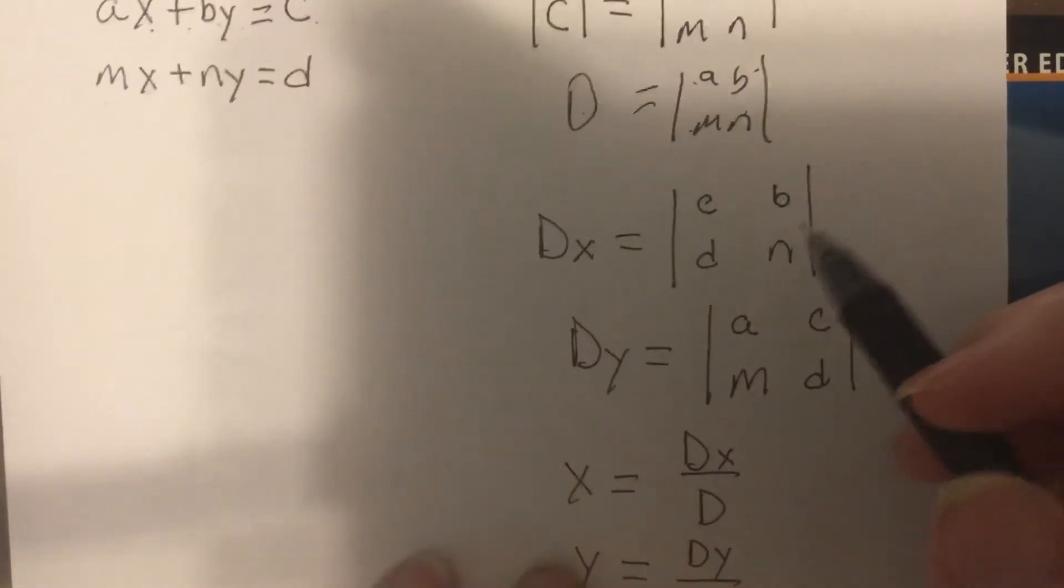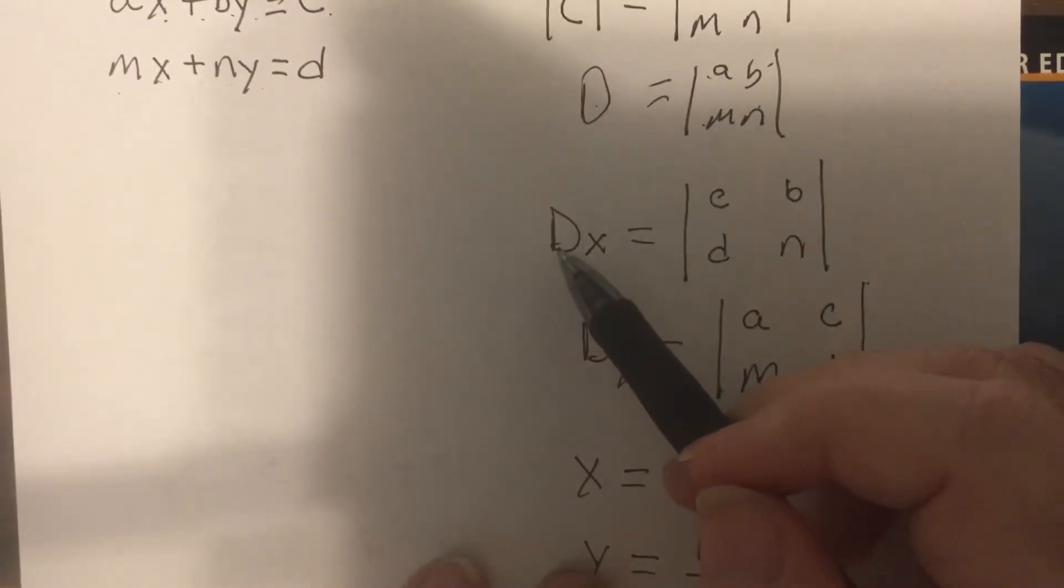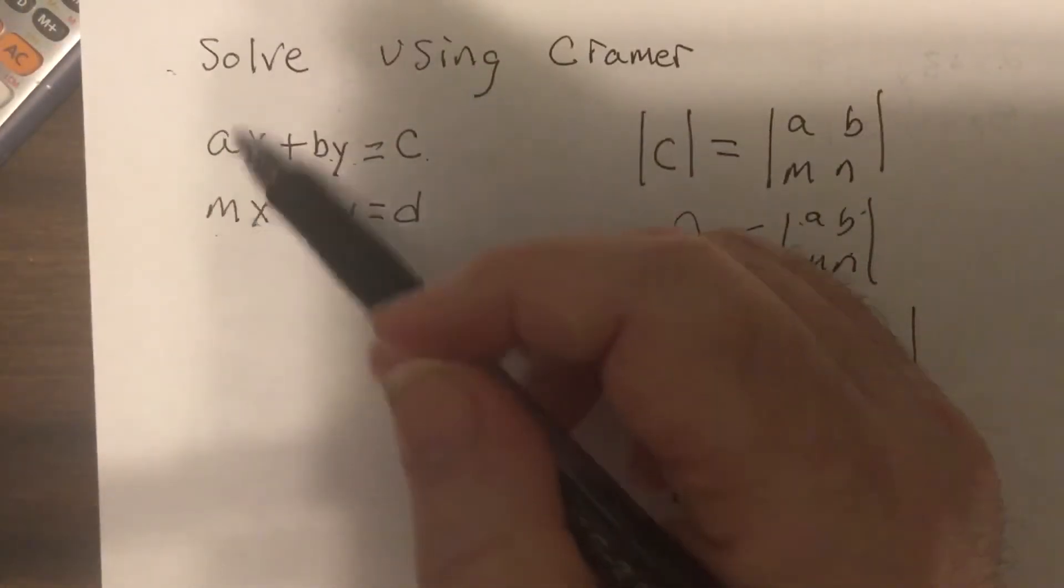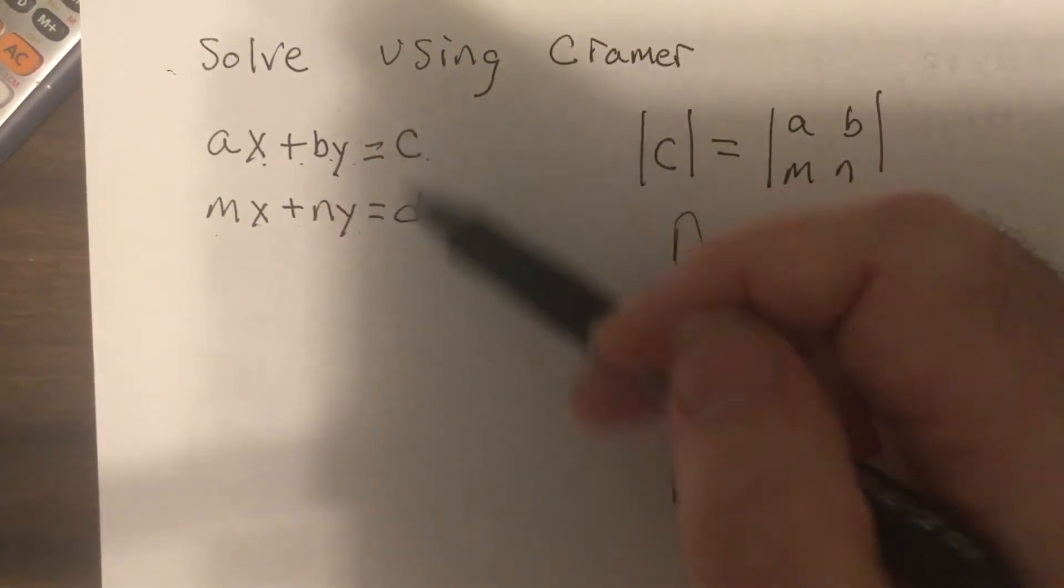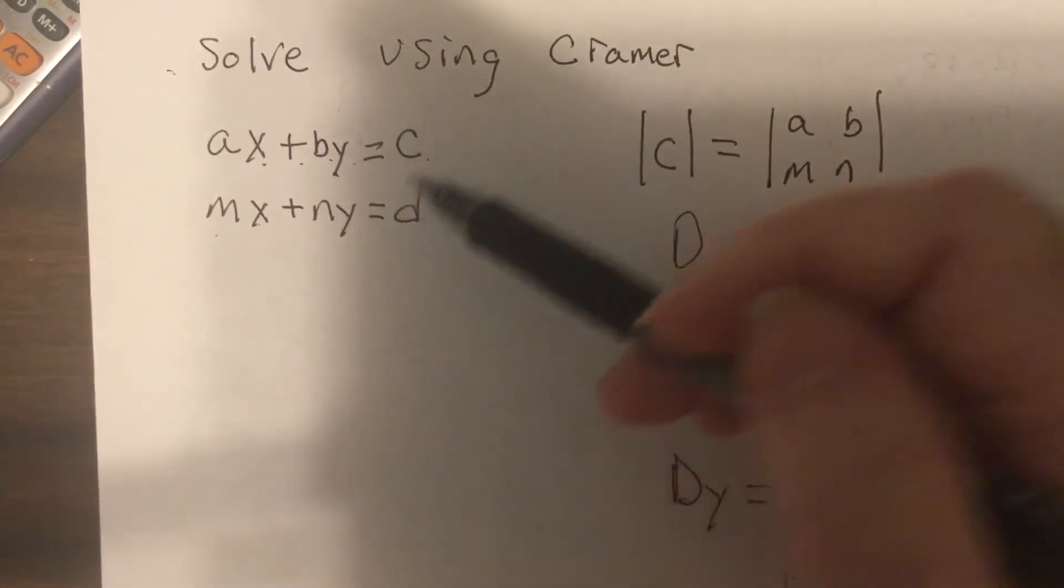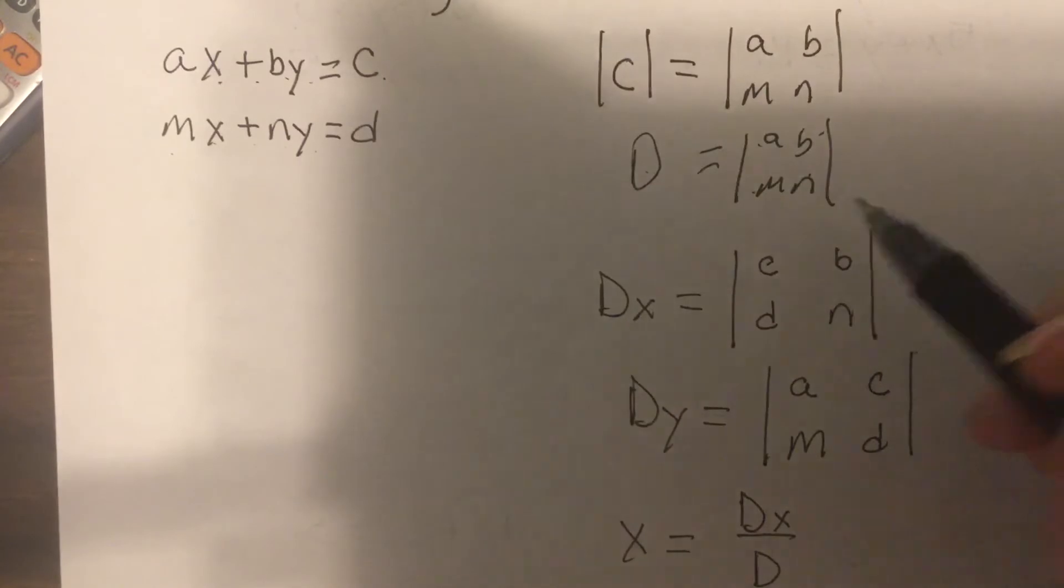Now, there's a matrix called, or the determinant called DX. That's where you take the coefficients for X, throw them out, put in the constants, the ones without variables, but you leave the coefficients of Y alone.